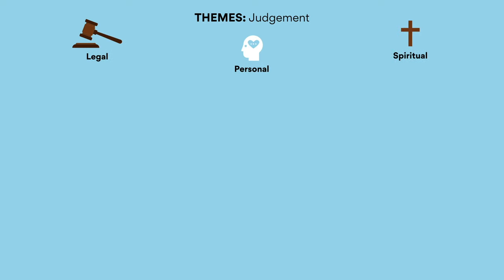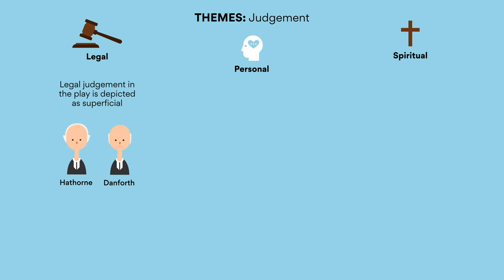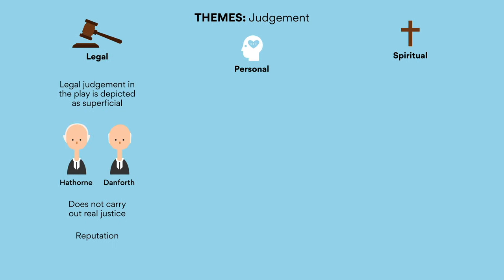Judgment. Judgment in The Crucible encompasses three meanings: the legal, personal, and spiritual. The legal judgment in the play is depicted as superficial, mainly illustrated through the characters of Hathorne and Danforth. The theocratic Salem court does not carry out real justice due to its dogmatic focus on reputation — in other words, reputation is more important to them than justice. This is depicted by Danforth's stubborn refusal to free the innocent accused, due to his belief that it would lead to a tainted esteem of the court.